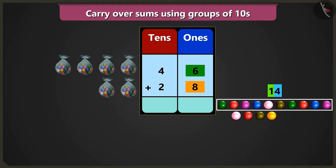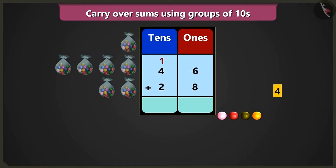Yes, now 14, that is 1 tens and 4 ones. So from 14, we will take 1 tens and in the box of tens, write it on the top in small letters. And write 4 ones in the box of ones.